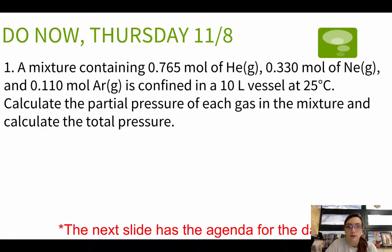Today's Do Now is going to be a review of Dalton's Law of Partial Pressures from yesterday. Today's Do Now is dealing with a mixture of helium, neon, and argon put in a 10-liter container. Your job is to calculate the partial pressure of each gas as well as the total pressure. So pause the video, see if you can solve it, and then continue watching the video for me working through the answers.